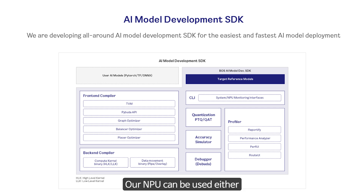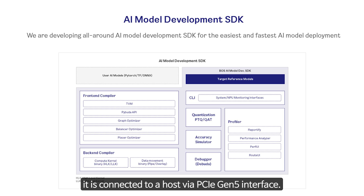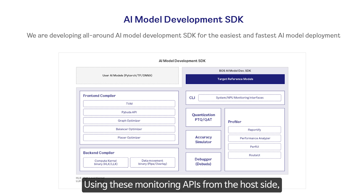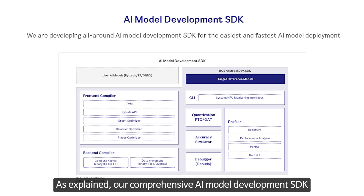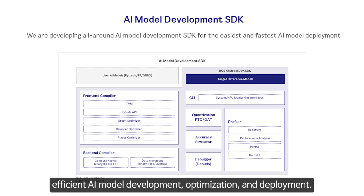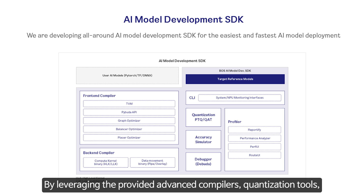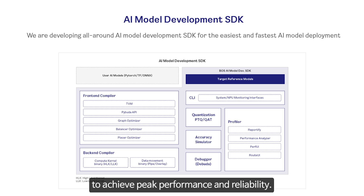Our NPU can be used either as a standalone unit or as an accelerator. When used as an accelerator, it is connected to a host via a PCIe Gen interface. Using these monitoring APIs from the host side, the status of resource usage and system health can be monitored in real-time. Our comprehensive AI model development SDK provides all the necessary tools and interfaces for efficient AI model development, optimization, and deployment. By leveraging the provided advanced compilers, quantization tools, profilers, simulators, and debuggers, developers can ensure their models achieve peak performance and reliability.